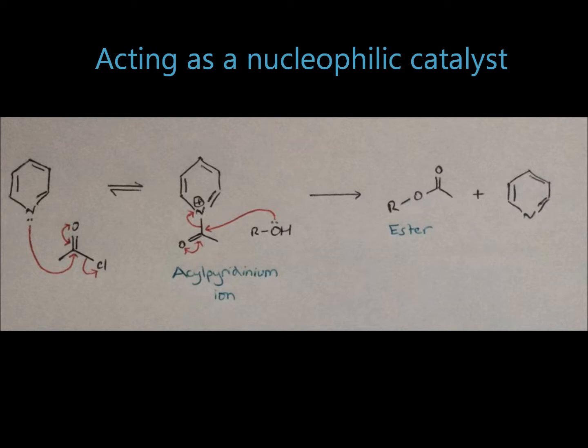If we look at what has actually happened here, we can see that the pyridine has made the acid chloride more reactive and susceptible to attack by the alcohol, resulting in the formation of an ester.